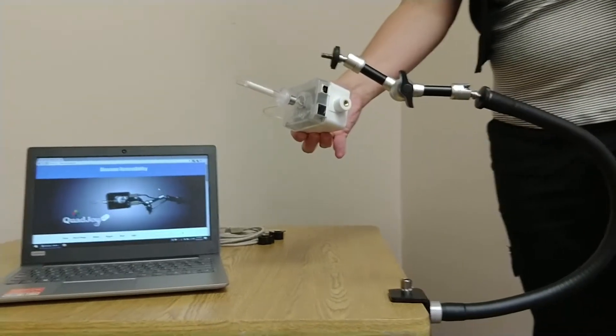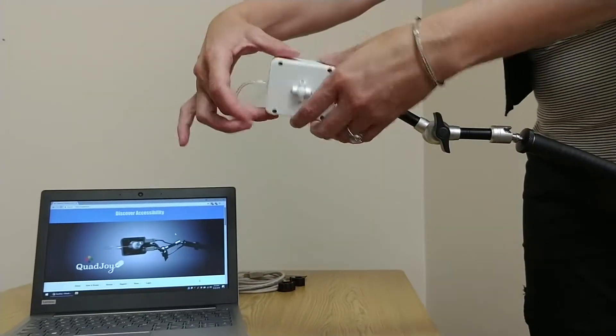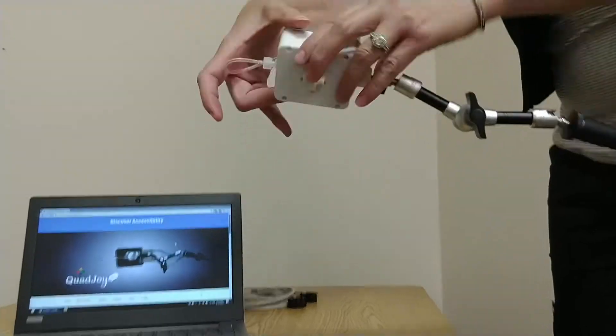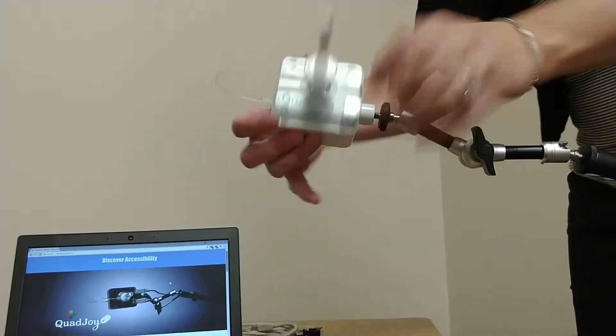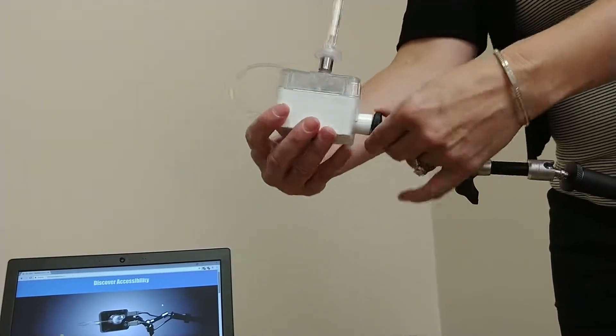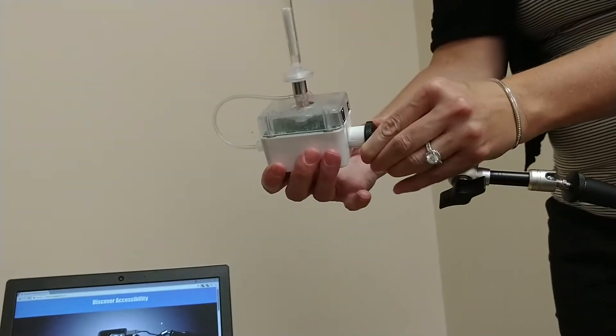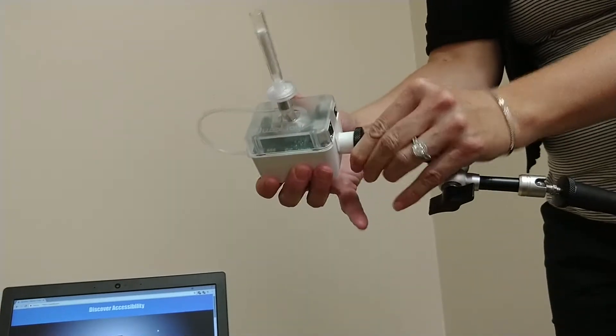Now take your Quad Joy and thread it onto the articulating end. Lastly, you'll want to tighten that black ring a few small turns to lock the Quad Joy in place.